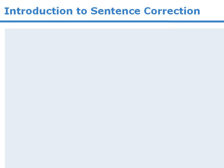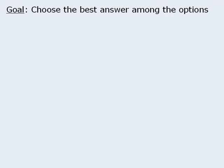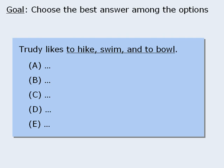When tackling sentence correction questions, it's important to remember that your goal is not to find the best possible way to express an idea. Your goal is to choose the best answer among the five given options. Failing to understand this distinction can cause problems. To illustrate this, consider the following question.